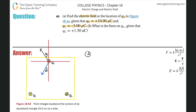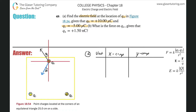Now I set up a component table with an x-column and a y-column. I'll list each vector on the left. Let's start with E_b — the electric field produced by q_b at q_a's location. I can find its magnitude using the electric field formula.